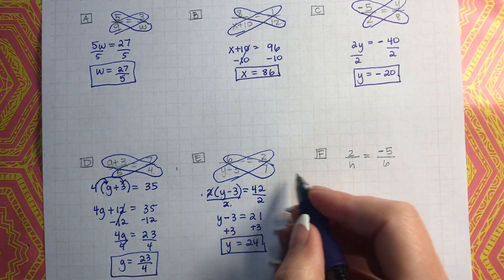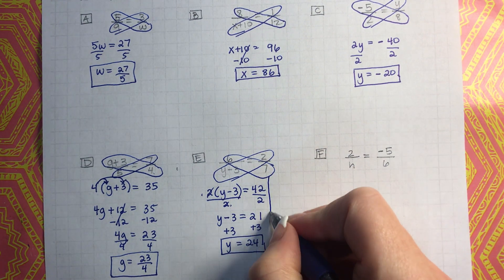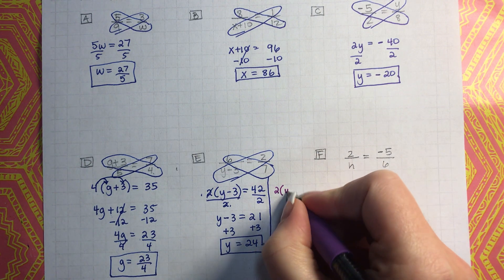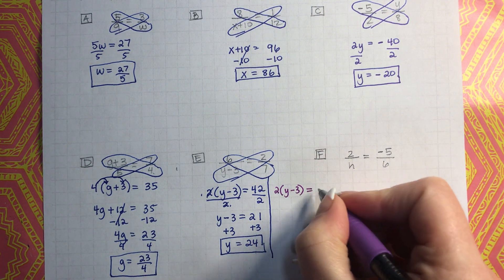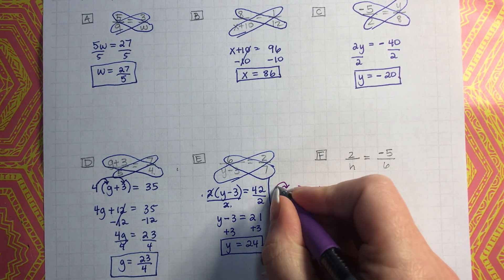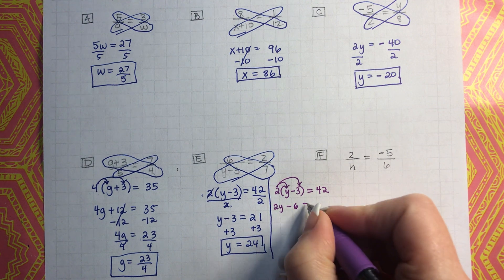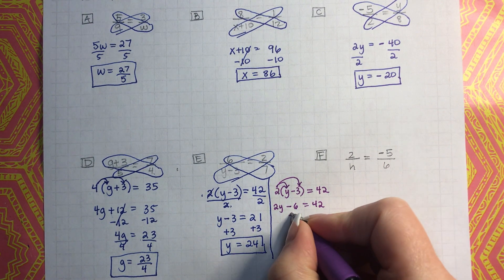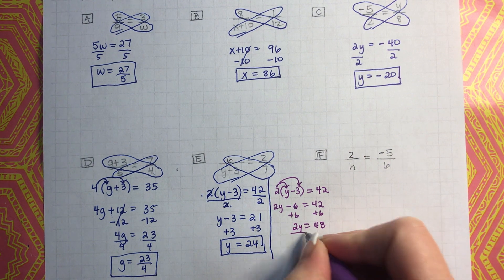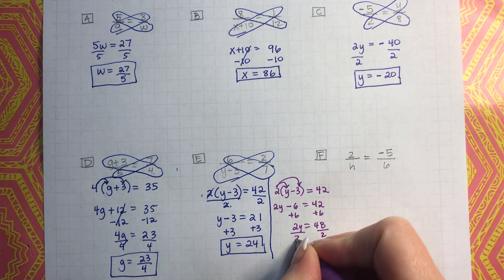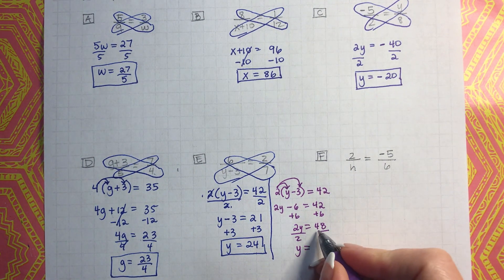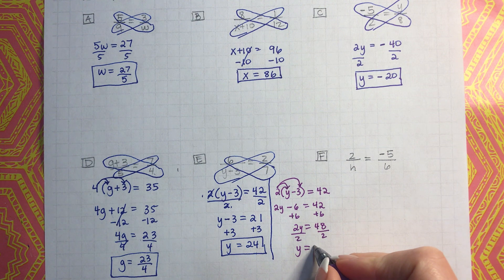I'll also solve it using the distributive property so you can see it both ways. That would be 2y, and 2 times negative 3 would be negative 6, equals 42. Then add 6 to both sides, giving 2y equals 48. Divide both sides by 2 — half of 40 is 20, half of 8 is 4 — so y equals 24. You get the same answer either way.